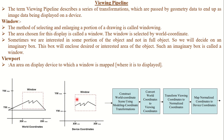Pipelining means one after another, piece by piece, we are converting the real-world image into a 2D image. There are some standard steps. Step one: construct the world coordinate scene using modeling coordinate transformations. World coordinates means the window has a size defined by X-world minimum, X-world maximum, Y-world minimum, Y-world maximum — that is the real-world size. Step two: convert the world coordinate into the view coordinate. The real-world size may be in kilometers or meters; we want to convert it to a smaller scale, maybe in inches or millimeters. Step three: transfer the view coordinate to the normalized coordinate, which is our 2D system. Step four: map the normalized coordinate to the device coordinate.